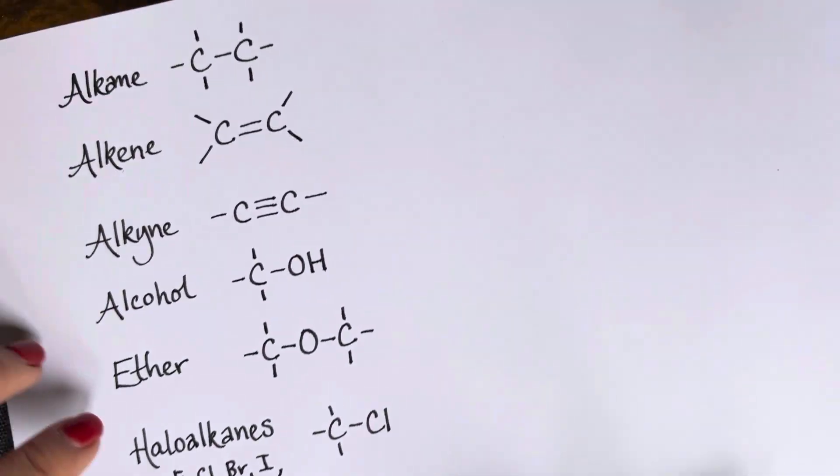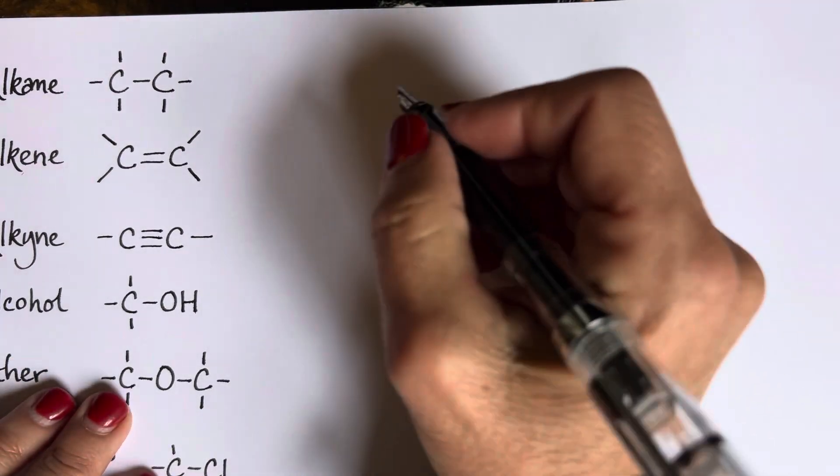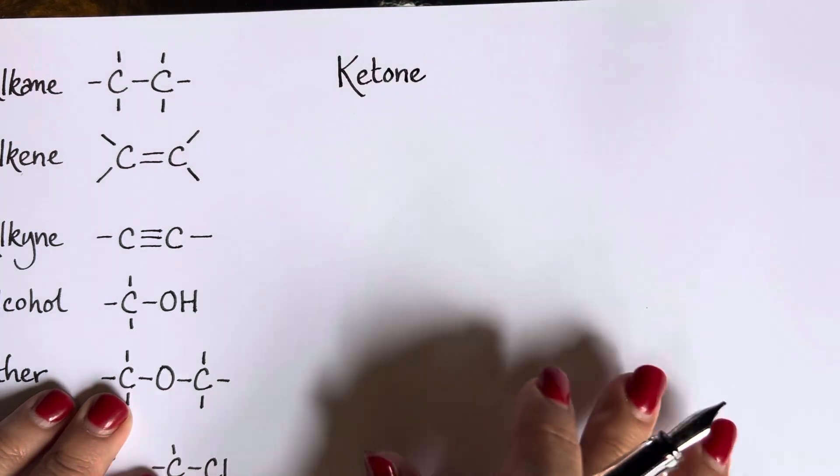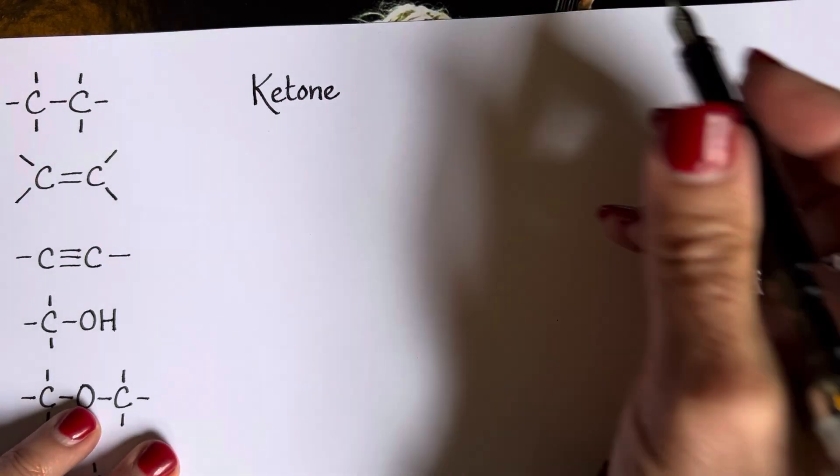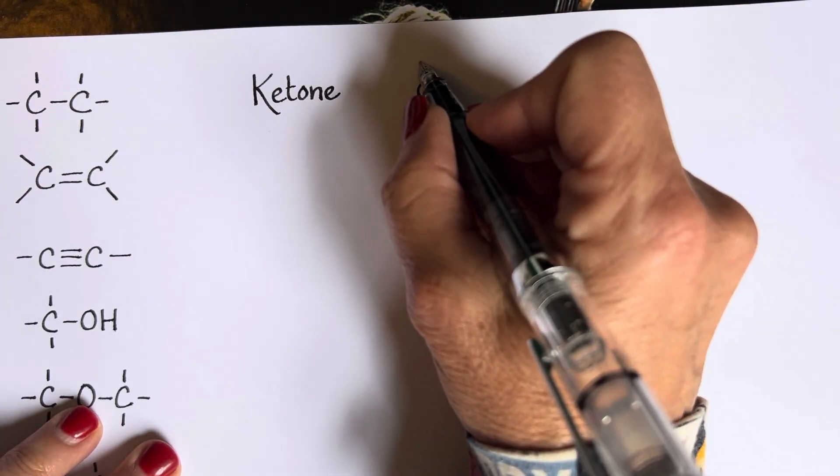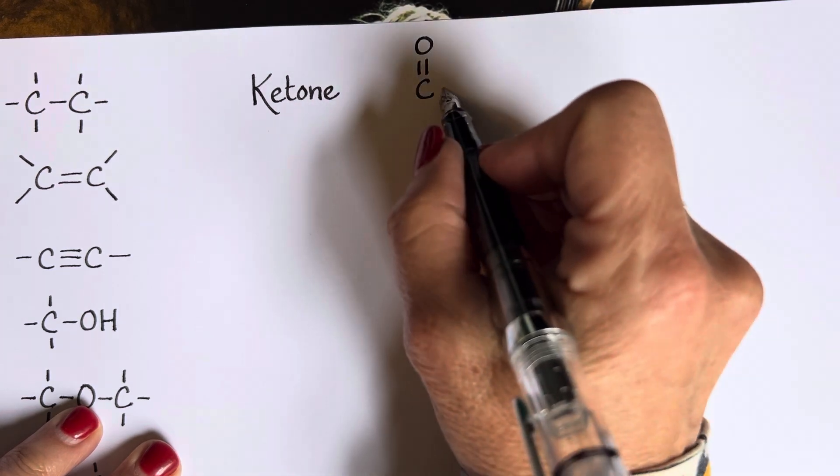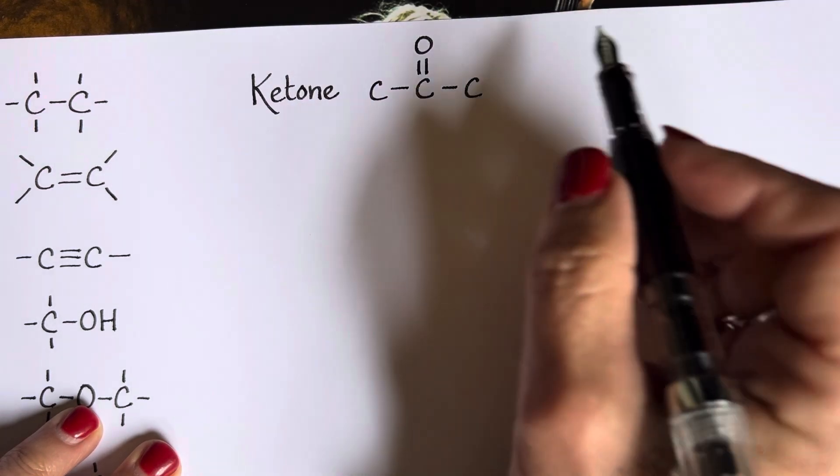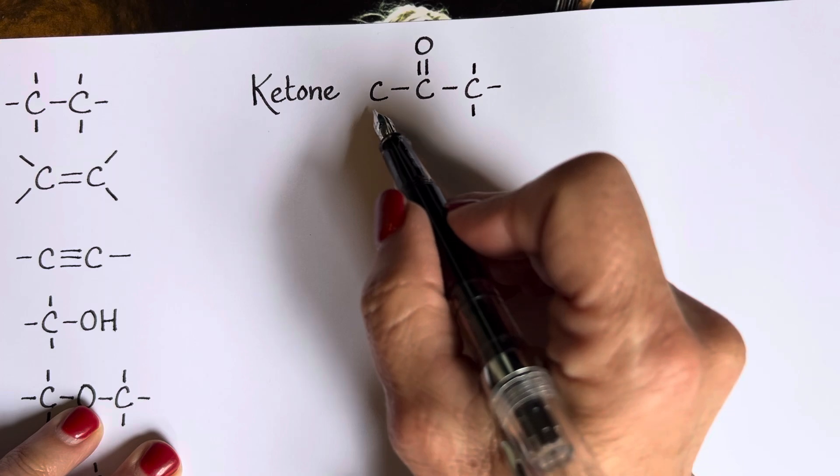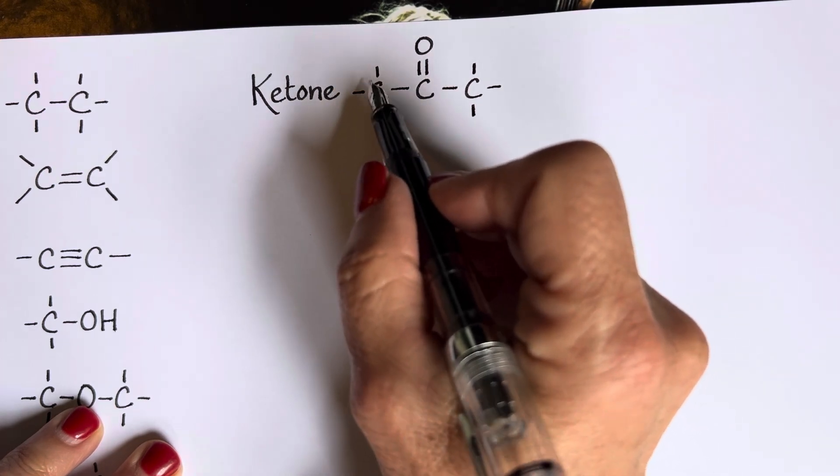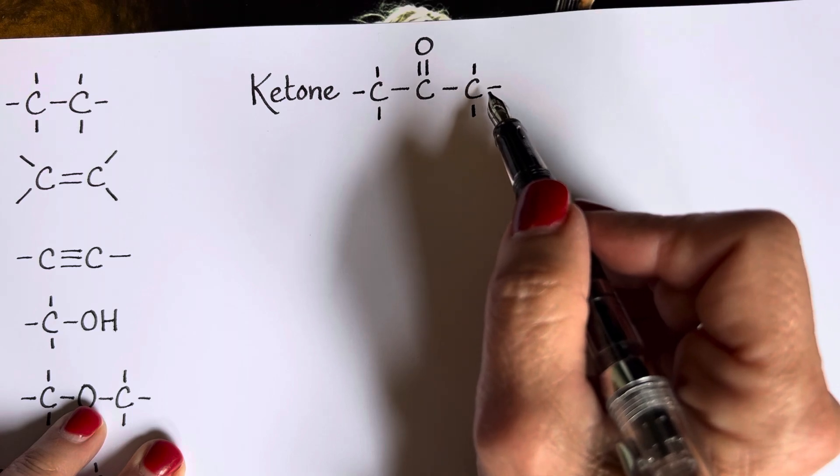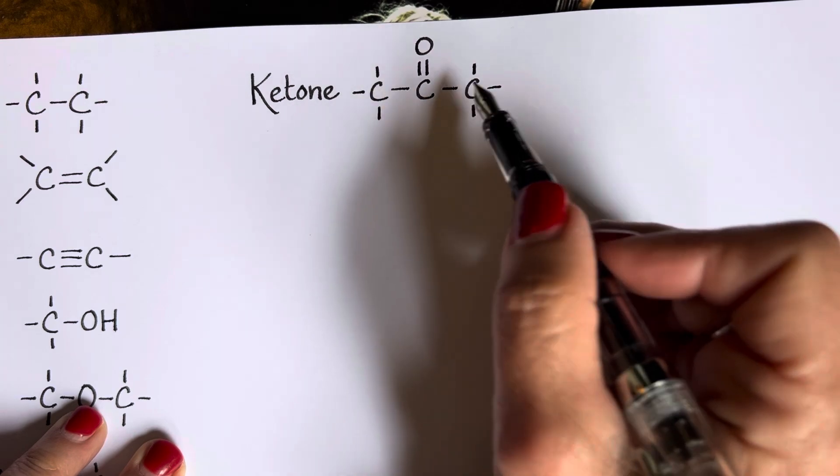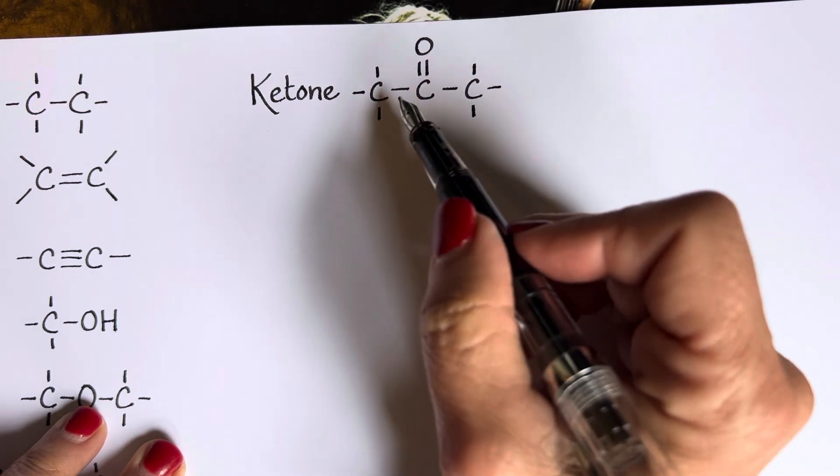As opposed to a ketone. A ketone is, again, this kind of sandwich, as I call it, where you've got C double bond O, and at both sides is bonded to carbon, which can then be bonded to other things. I'm just leaving those blank, kind of like an R group. But this cannot be hydrogen, nor can this, because otherwise it would be an aldehyde. So here's our ketone.